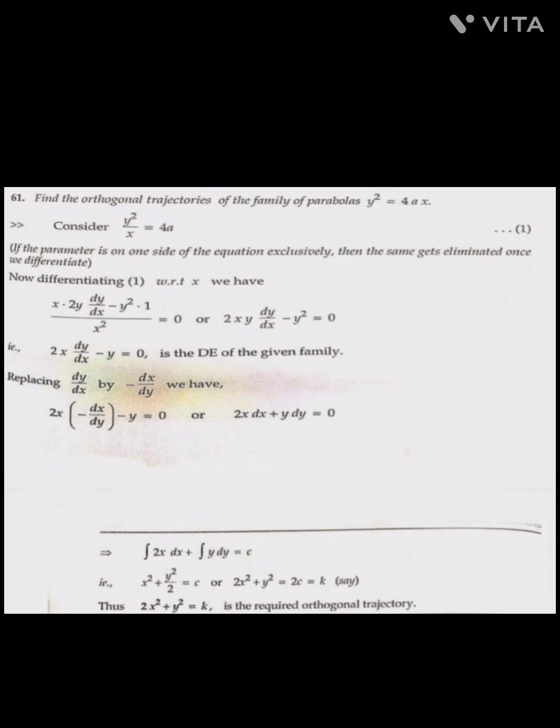This is in Cartesian form, so we replace dy/dx by -dx/dy. We get: 2x(-dx/dy) - y = 0, or 2x dx + y dy = 0.